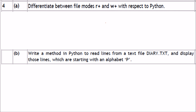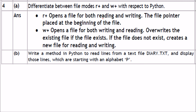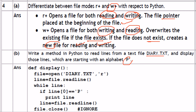Differentiate between file modes R+ and W+ in Python. R+ opens the file for both reading and writing, with the file pointer placed at the beginning of the file. W+ opens the file for reading and writing, overrides the existing file if it exists, or creates a new file if it does not exist. To read lines from a text file and display those starting with 'P': open the file, read each line, check if the first character is 'P', and print it. Then close the file.